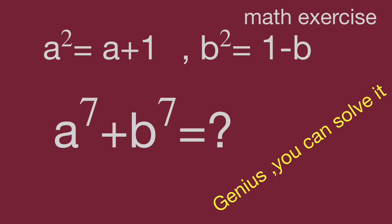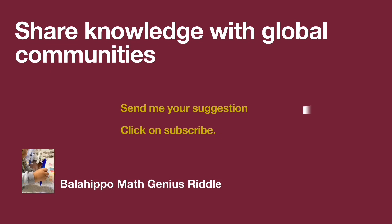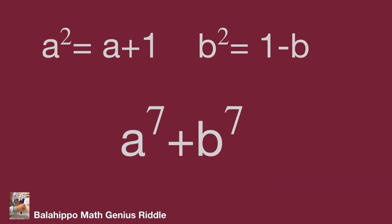Keep watching the video to get the result. To get the value of a power of seven plus b power of seven, we have a squared equal to a plus one. Let's generate a power of seven from a squared.